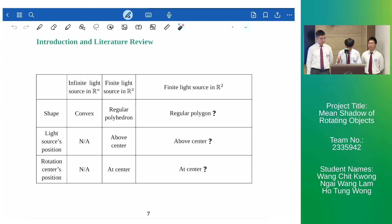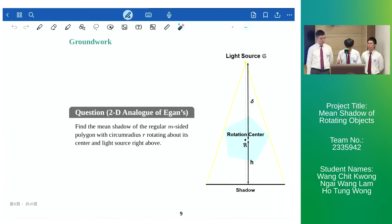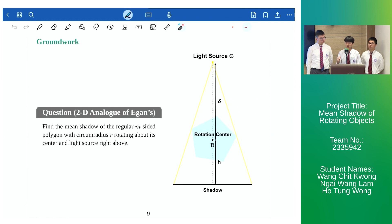Egan investigated the case where the light source is directly above the center of the regular polyhedron and the polyhedron is rotating about its center. Stepping back into R2 we would like to establish a groundwork of the 2D analog of Egan's work. Therefore just like Egan we'll focus on the mean shadow of regular m-sided polygon rotating about its center with light source directly above the center and we denote the relative height of the rotation center and the light source as h and delta respectively.